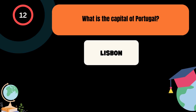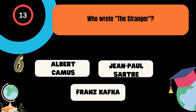Who wrote The Stranger? A. Albert Camus, B. Jean-Paul Sartre, C. Franz Kafka. And the correct answer is Albert Camus.